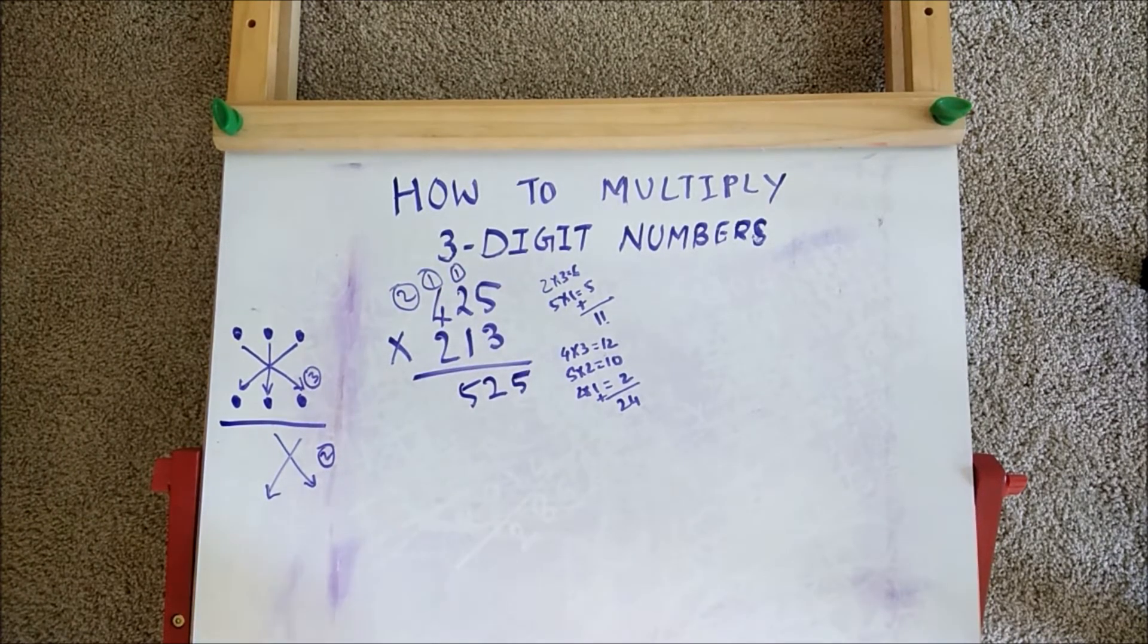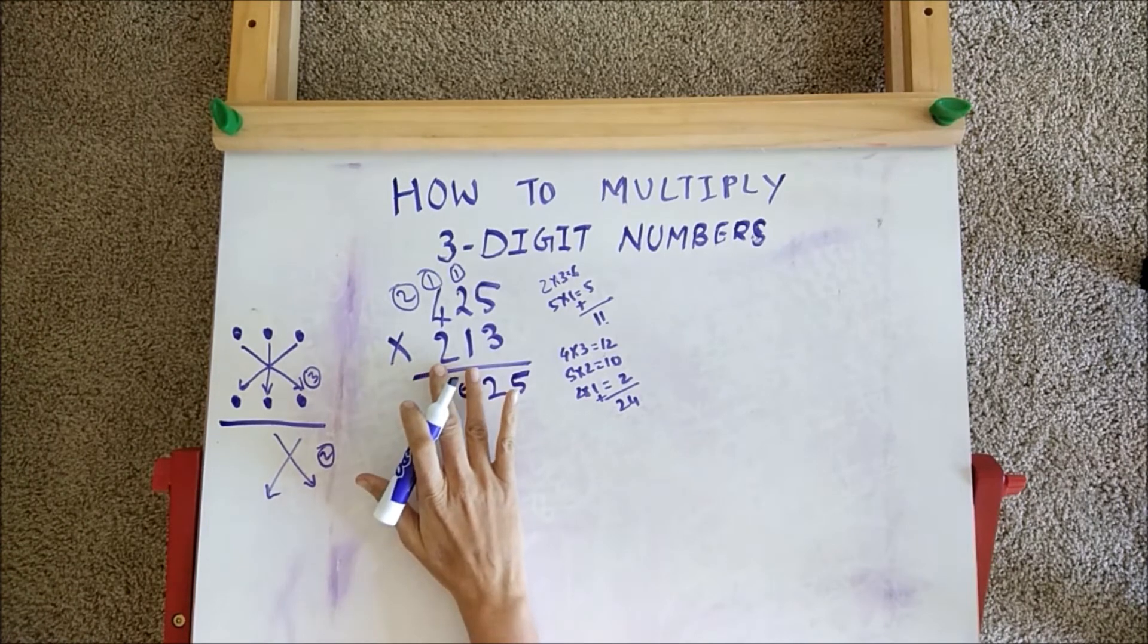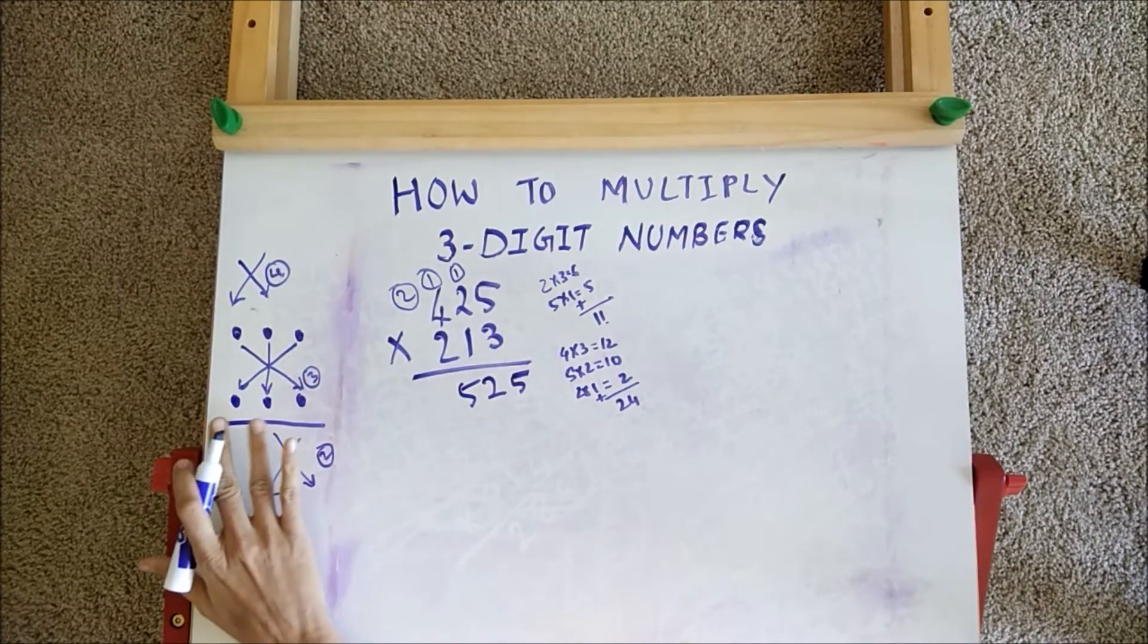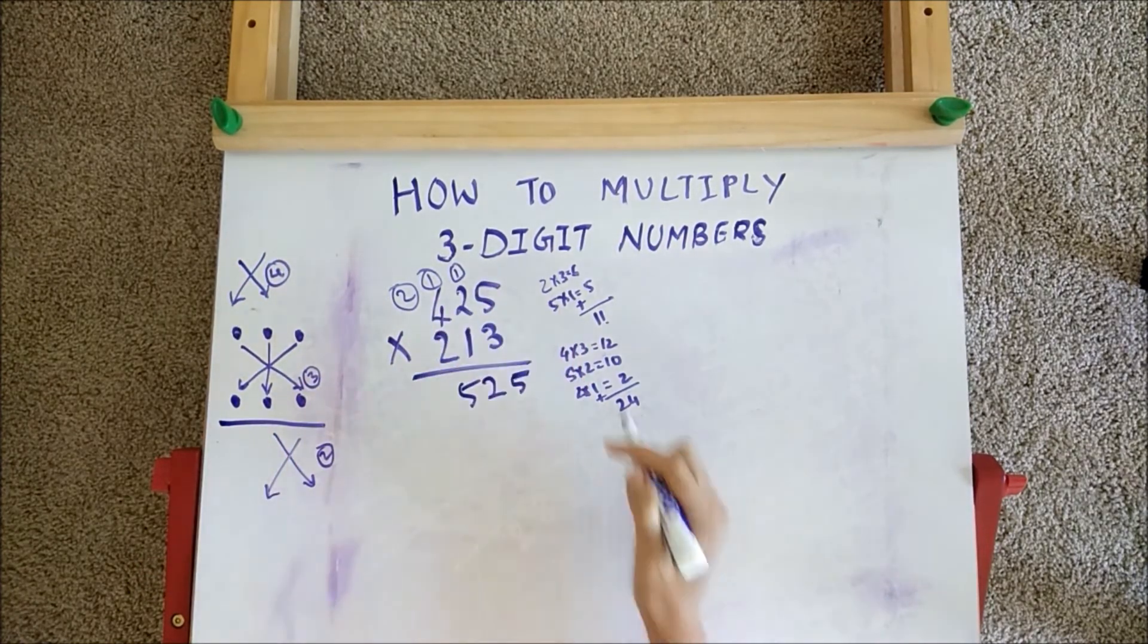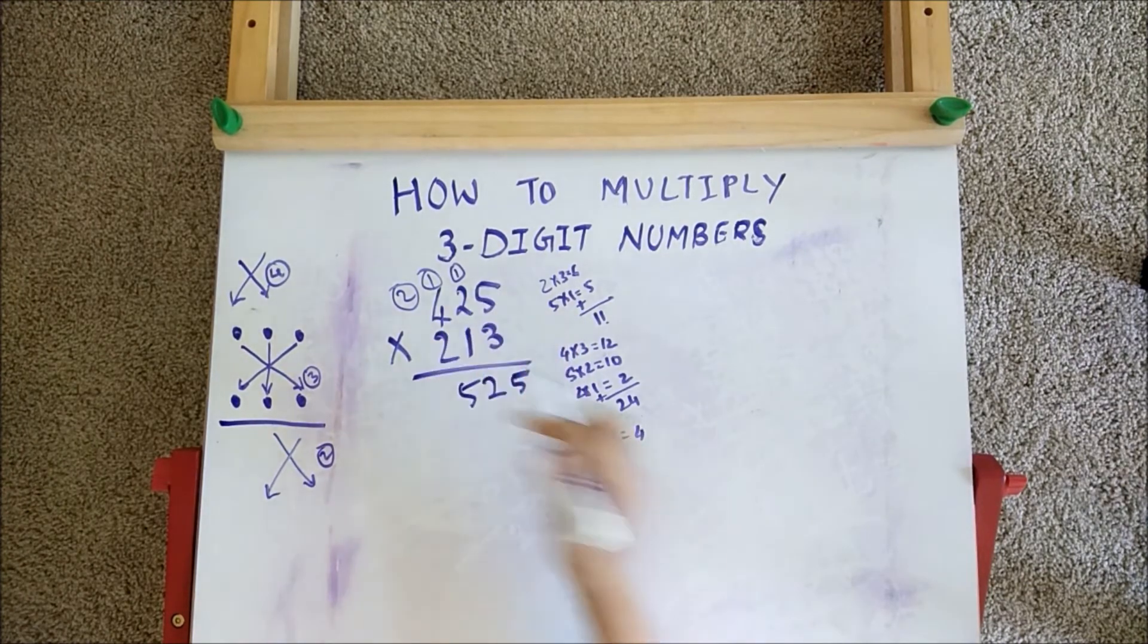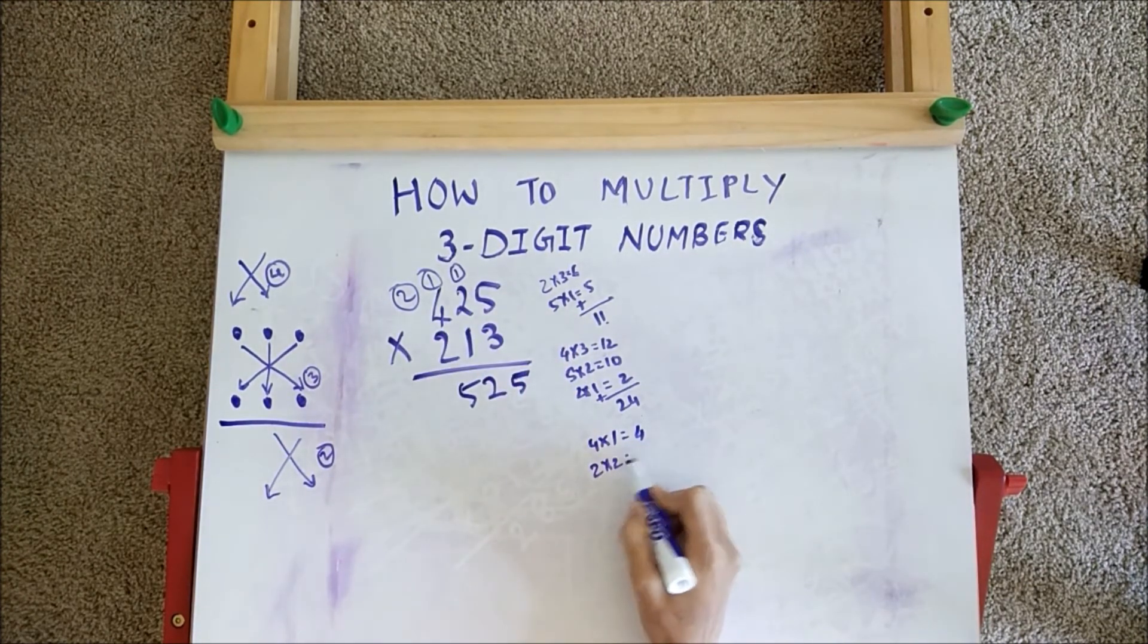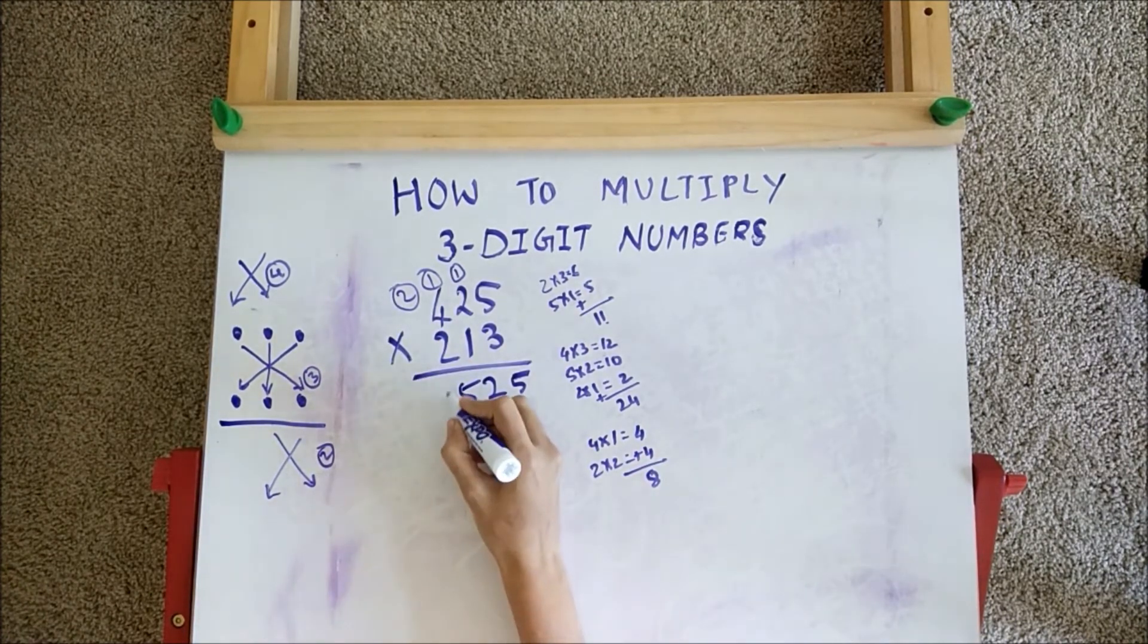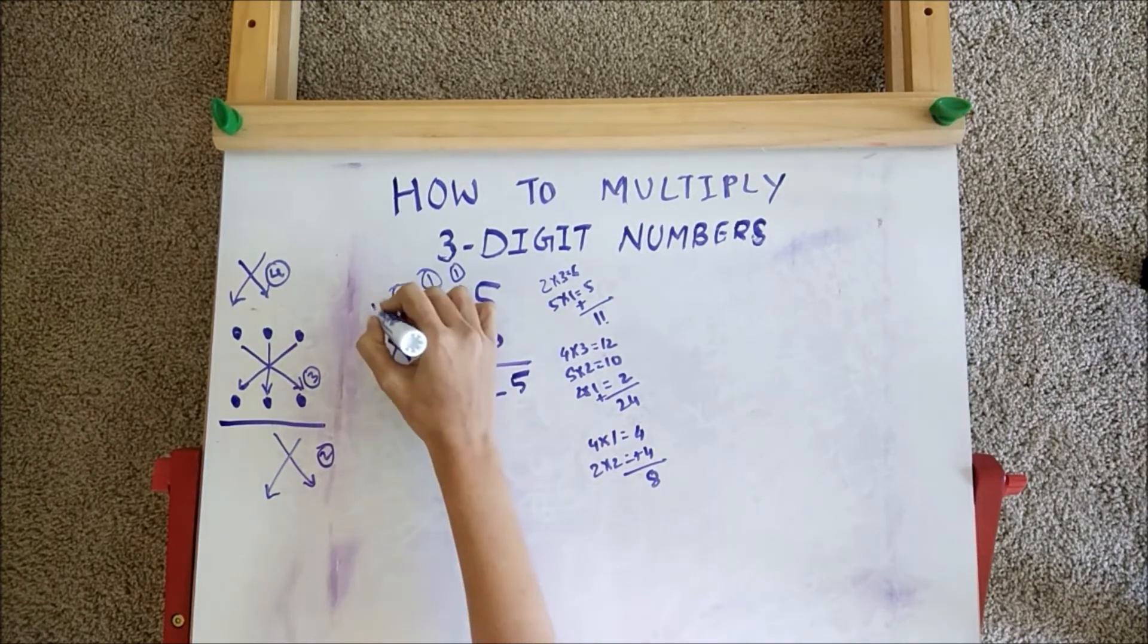In step 4, we cross multiply these two digits. So 4 into 1 is 4, 2 into 2 is 4. Adding those we get 8, and 2 is from our carry. So 8 plus 2 is 10. Write 0, carry 1.